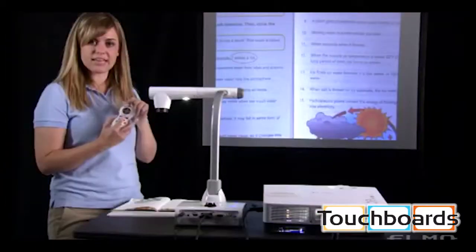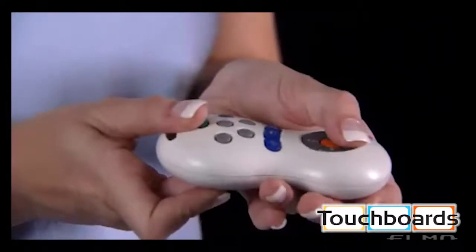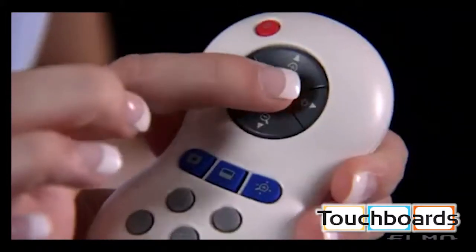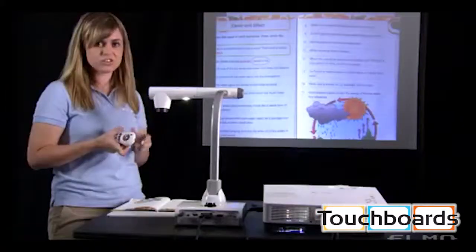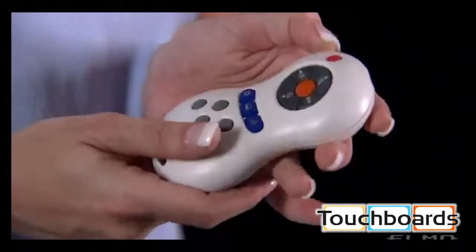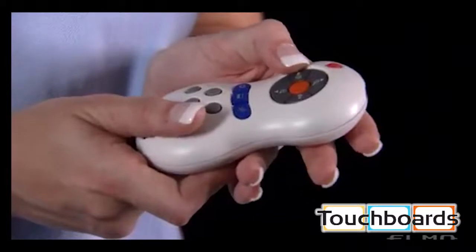You can zoom in and zoom out by pressing the plus and minus on the remote control. Press the orange button in the center to focus the image, and the two gray buttons on the left and right will adjust the brightness so you can lighten or darken the image.